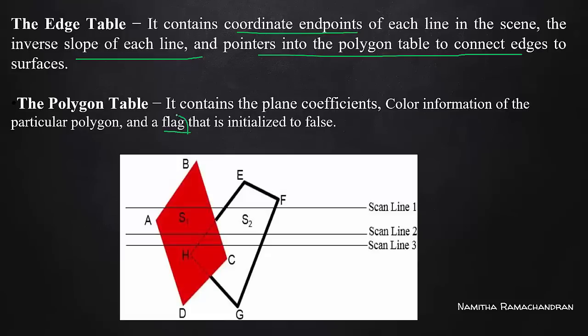An important element is the flag value. We are using the flag value to implement this specification. Once the edge is crossed for the first time, you can set a flag value to on. When the scanline enters the surface, the flag is on; when it exits the surface, the flag is off. This single-bit information represents on and off: scanline entering a surface sets the flag on, and exiting sets it off.